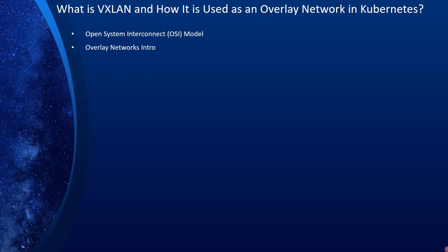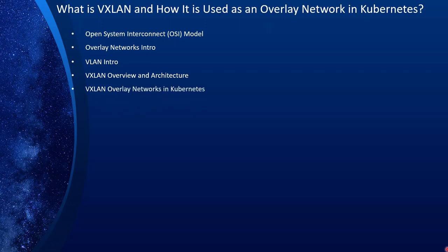Then we'll spend some time on an overview of what overlay networks are and why we need them. We'll then talk about VLAN, because VXLAN is an extension or an improvement over VLAN, so I want to make sure you understand what VLANs are. Then we jump into VXLAN — we'll take a look at the overview, architecture, and how it actually works. Finally, we put our knowledge to work and set up a brand new Kubernetes network using Calico, instructing Calico to use VXLAN. Then we do some network capturing to see what actually goes over the network when we use VXLAN.